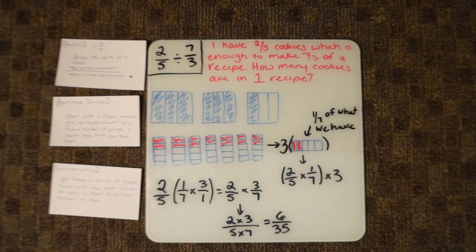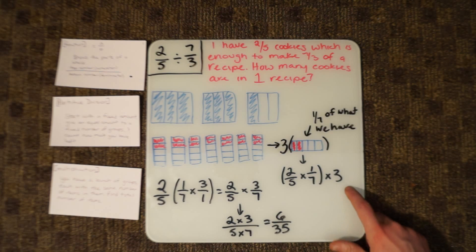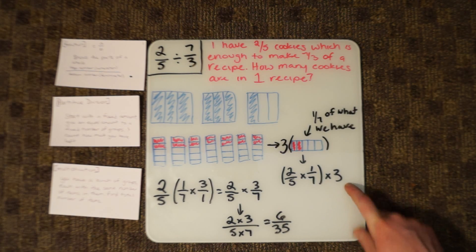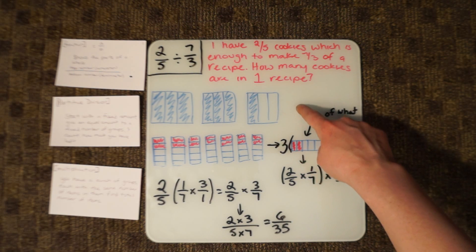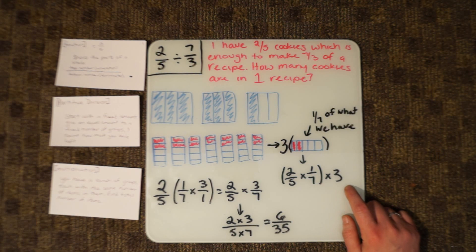And you have to remember the 3, because each original hole up here was made up of 3 pieces. So that's what we have to multiply by the 3.